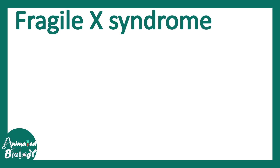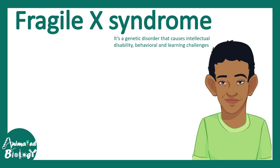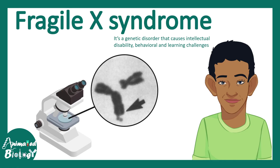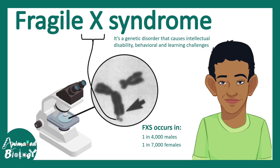In this video we'll get a quick overview of Fragile X Syndrome, a genetic disorder that causes intellectual disability, behavioral and learning-related challenges. When the X chromosome of Fragile X syndrome patients is seen under the microscope, one can see a fragile end — that is basically the X in Fragile X Syndrome. The occurrence is one in 4,000 males and one in 7,000 females, so it's more common in males.